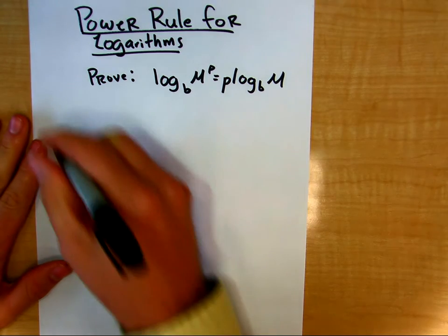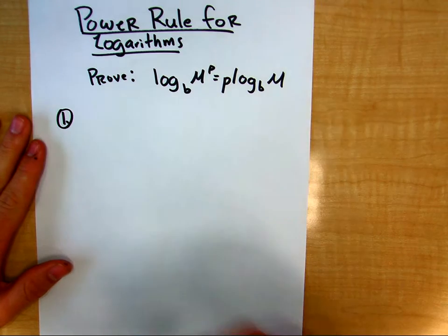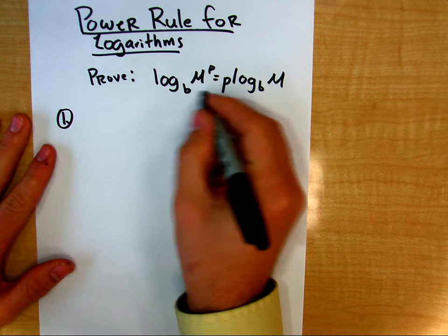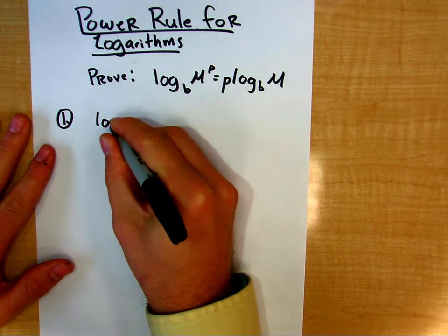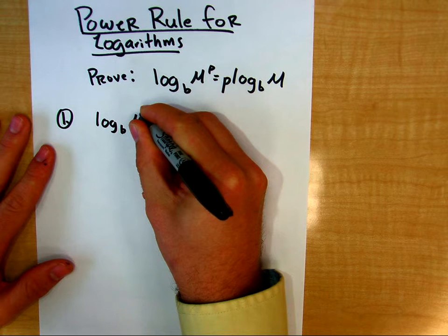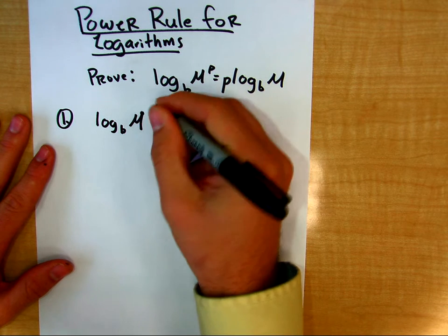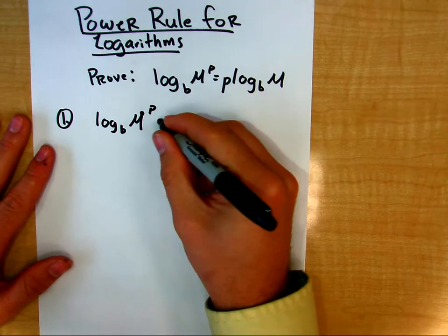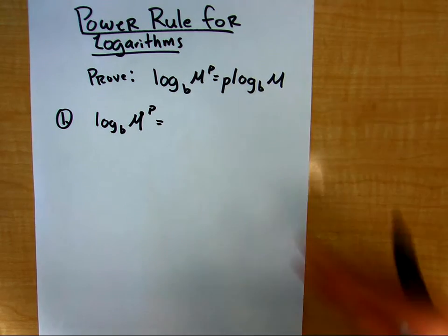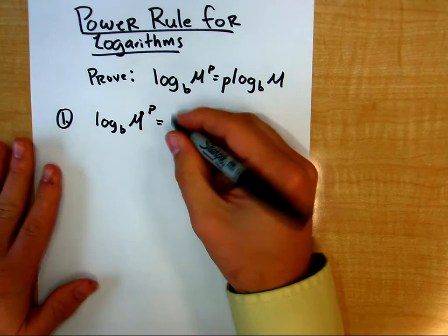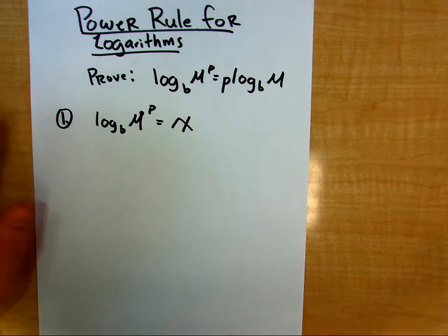So the first thing I'm going to do, my first step into informally proving this, is we're going to let this portion here, log base b of m raised to the p power, we'll just say it's equal to x, it's equal to something.